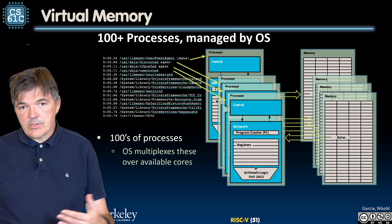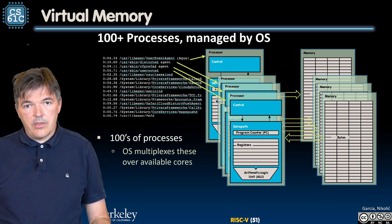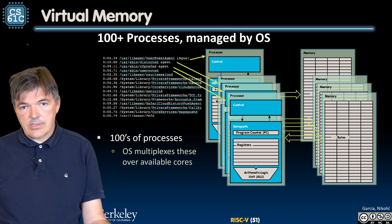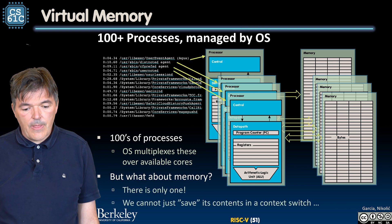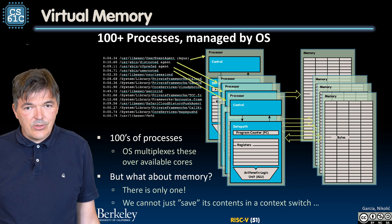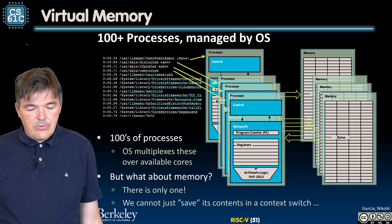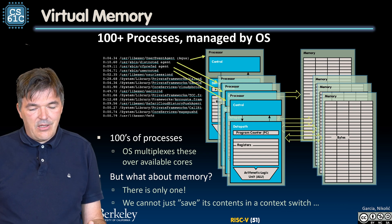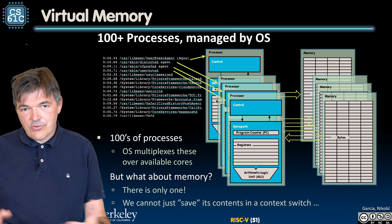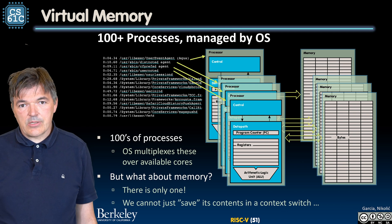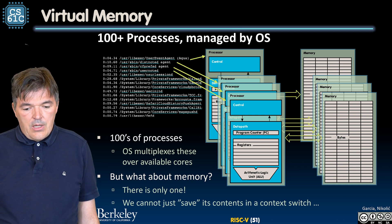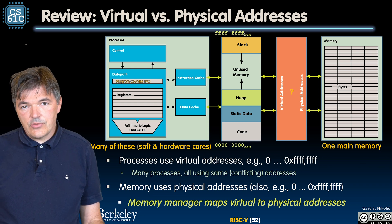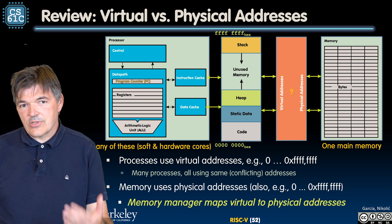Each process runs for some time on the core, and then through the mechanism of a context switch, another process takes ownership of the core. But what do we do with memory? There is only one memory, and we cannot just save its contents and put the data from another process on it during a context switch. So we have to run this translation process.